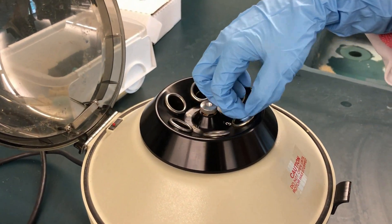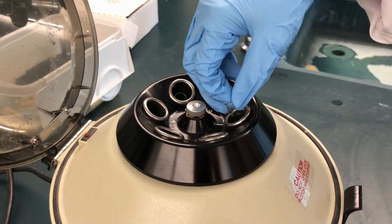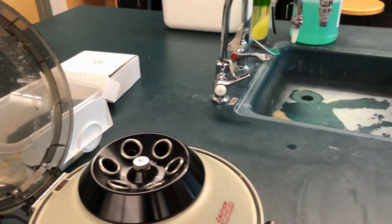After the centrifuge stops completely, carefully remove your test tube. You should see the layers with the petroleum ether and the pigments on the top layer.